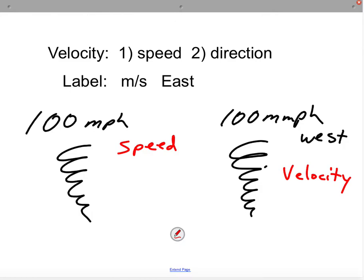And so therefore, a unit label for velocity would be meters per second east, for example. That would be a real good label, some sort of distance over time.